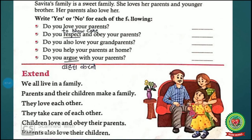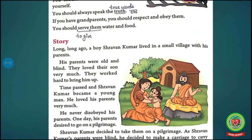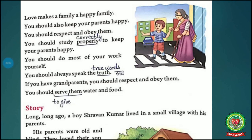It is your moral duty that you should love and obey your parents. The next line is: parents also love their children. If you love your parents, if you always respect and obey your parents, then in return your parents also love you. Now come to page number 60. The first line is: love makes a family a happy family. If you want a happy family, if you want to be happy in your family, then you should respect and obey your family members.